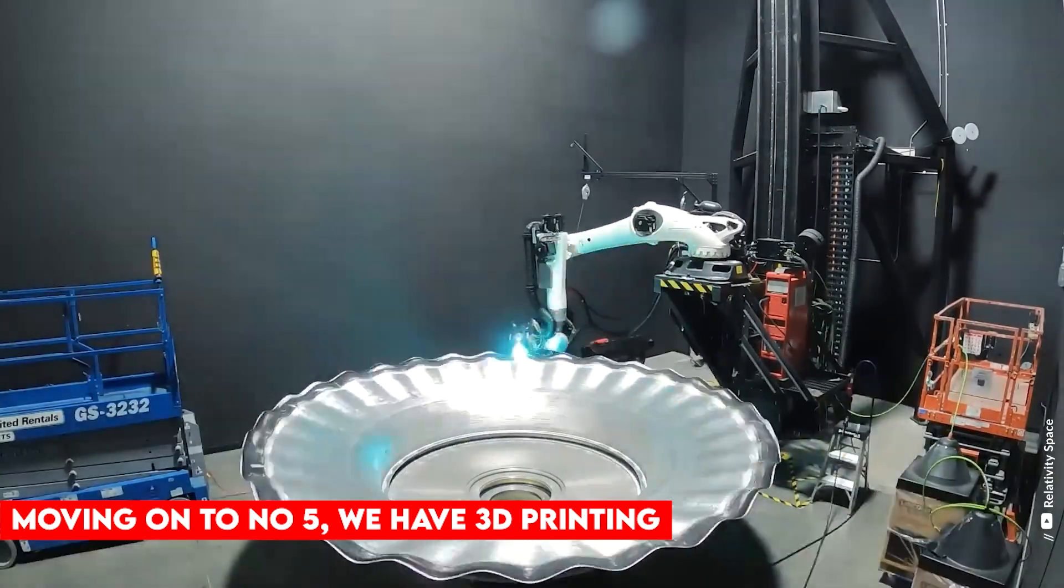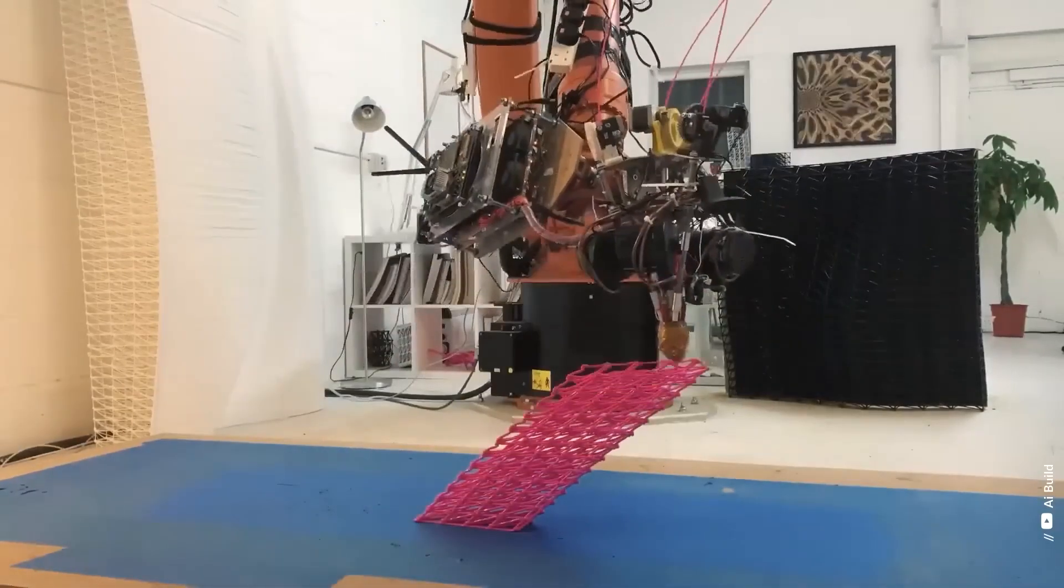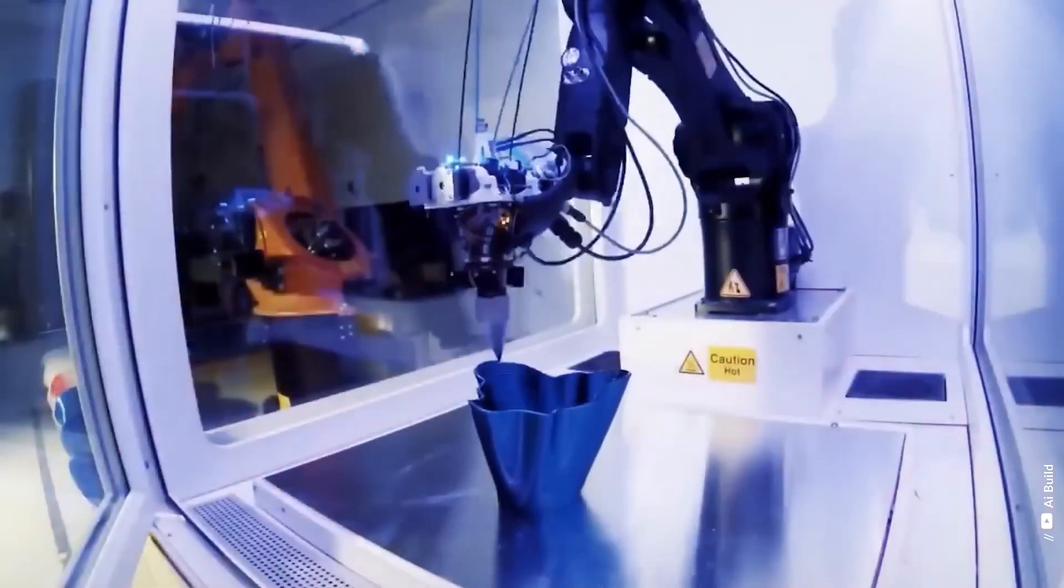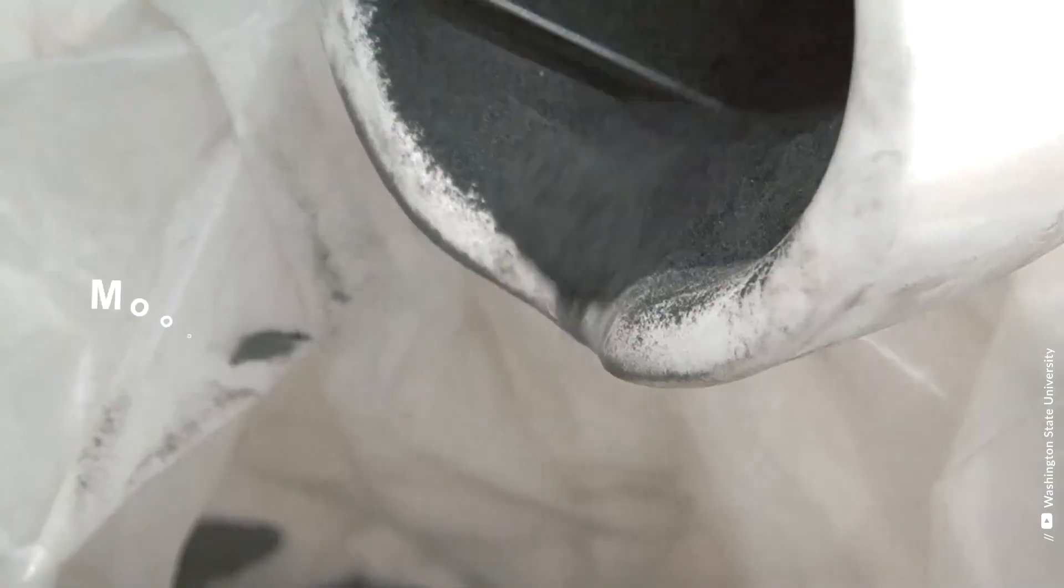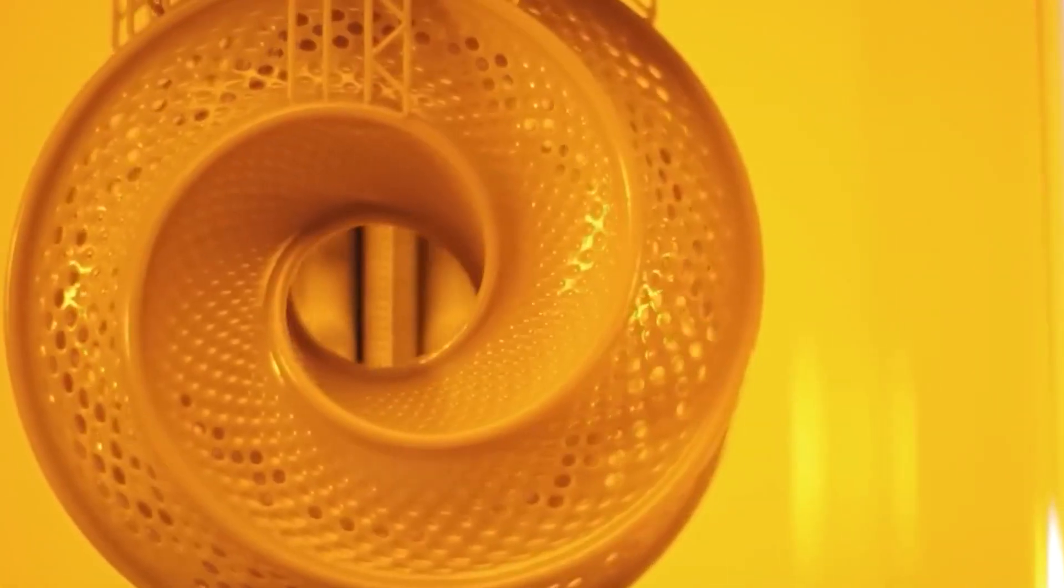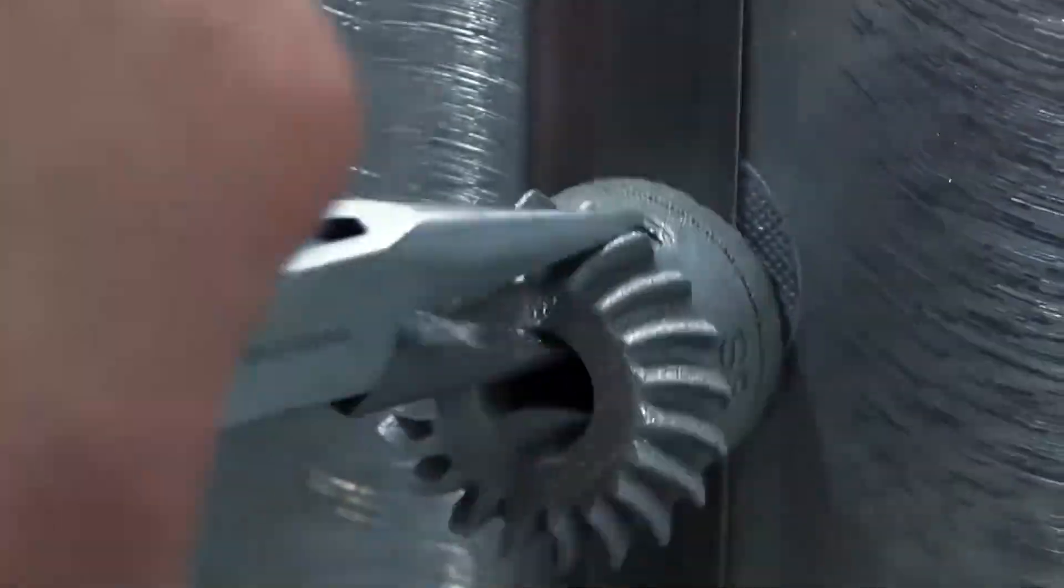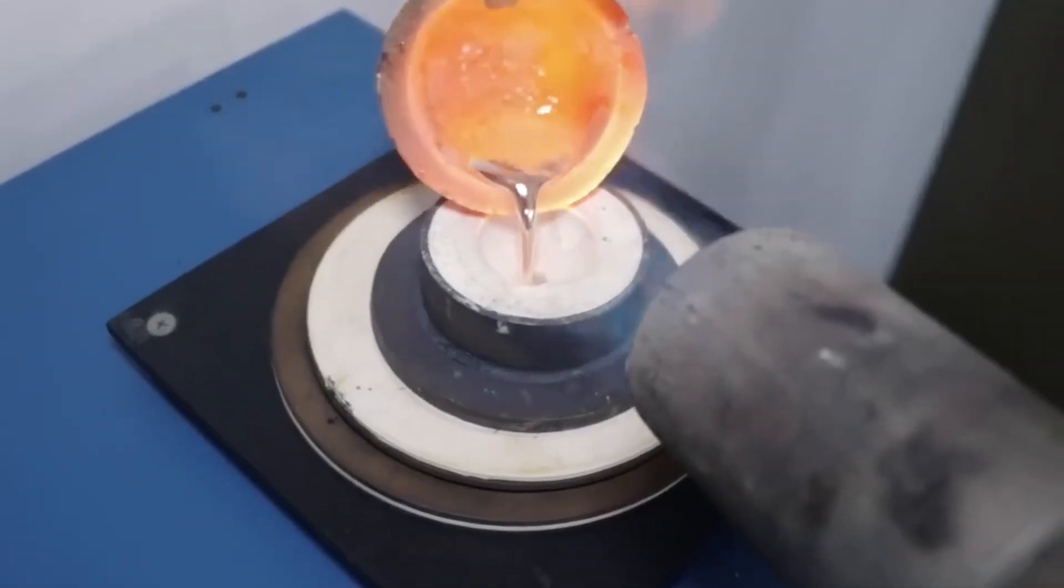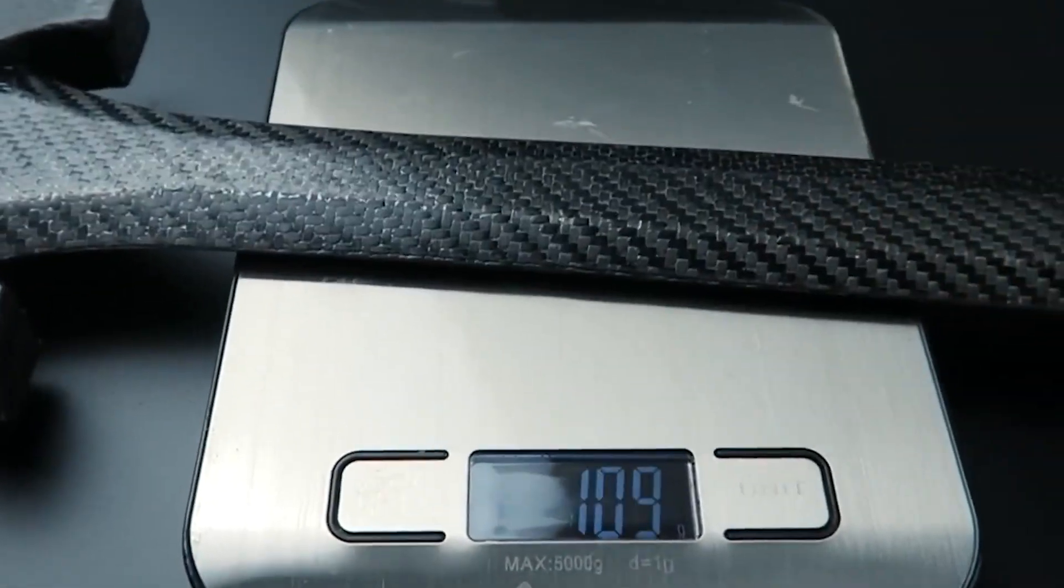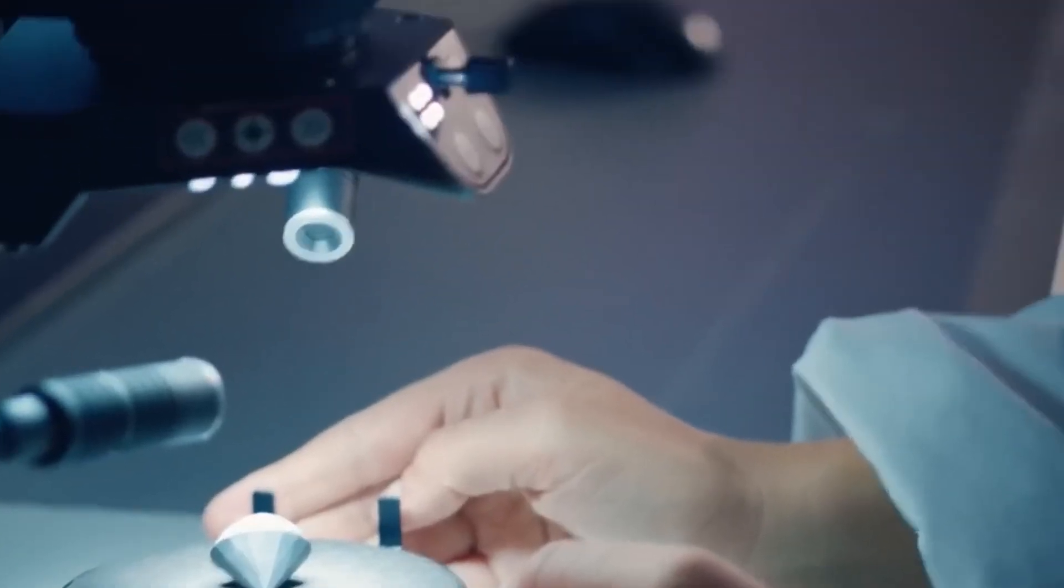Moving on to number 5 we have 3D printing. 3D printing is a revolutionary technology that is used to create all sorts of things, including prototypes. In the medical field, companies like Olsaform are using 3D printing to make customized bone replacements for patients. They use a special material called tricalcium phosphate, which is similar to human bones. The cool thing about 3D printed bones is that they are made specifically for each patient. This means that the bone replacements fit perfectly and work better in the body.